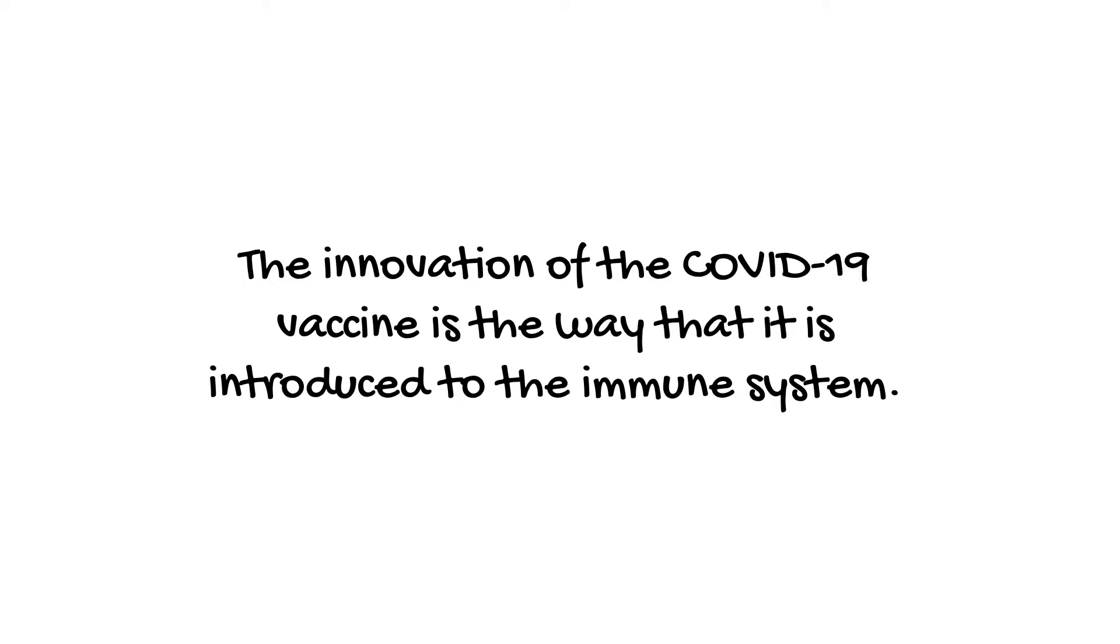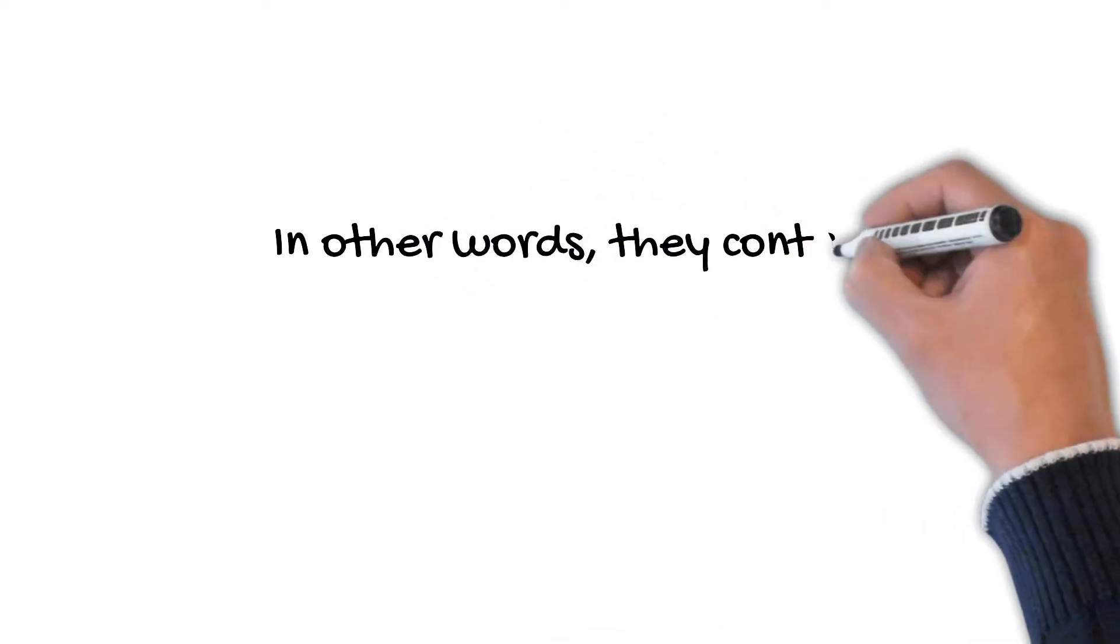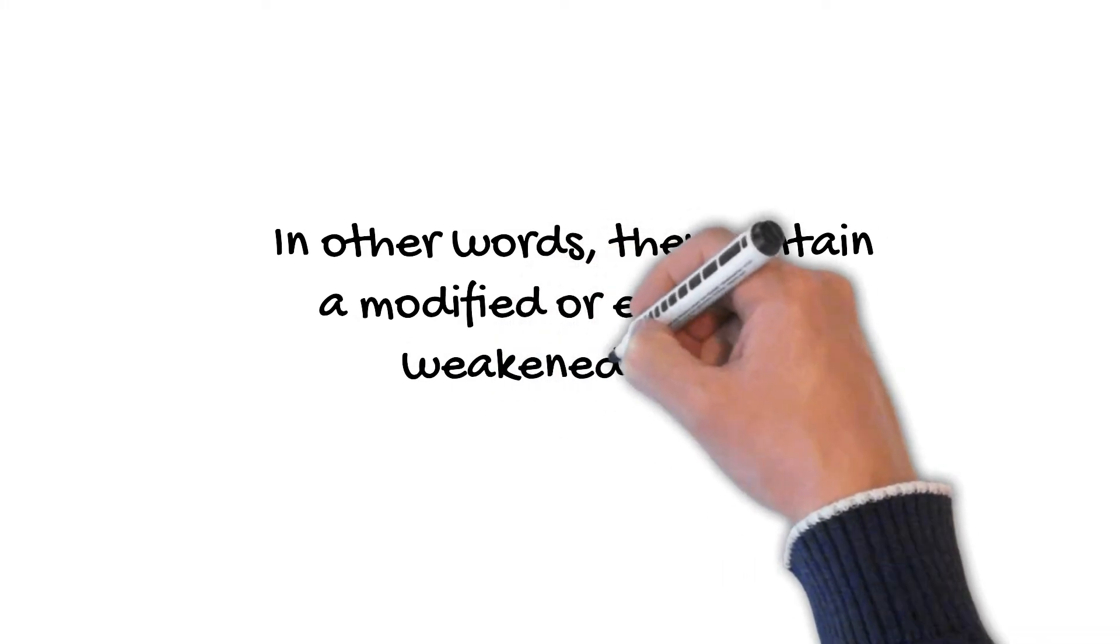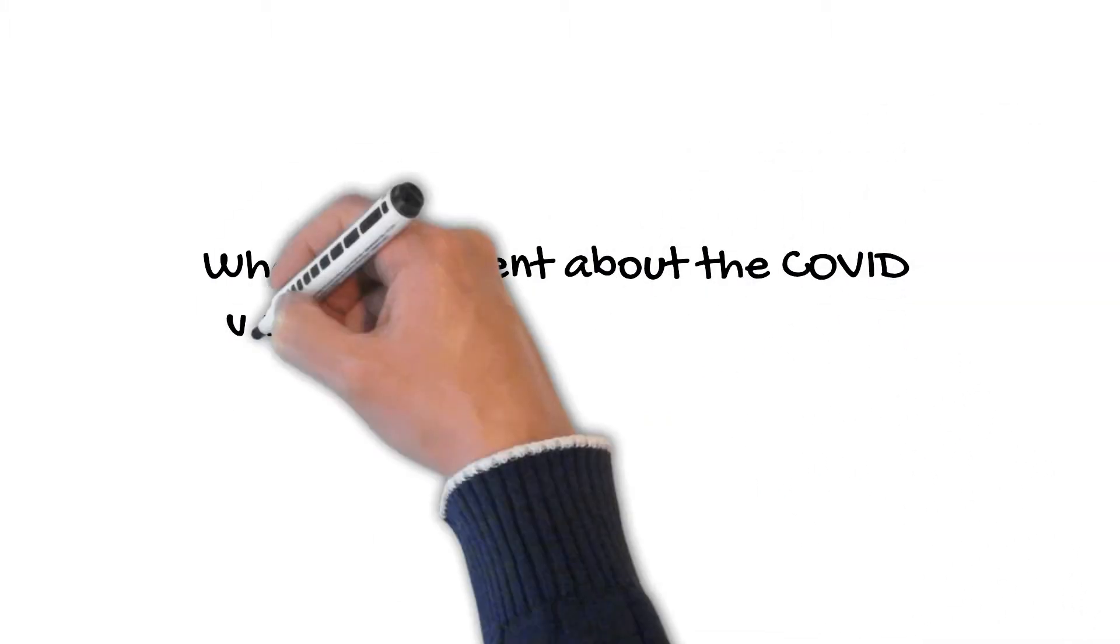Many of the vaccines that we're used to are so-called attenuated or killed vaccines. In other words, they contain a modified or extremely weakened virus. What's different about the COVID vaccine is that it's introduced as messenger RNA or mRNA.